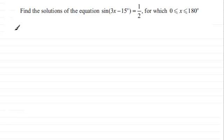Well first of all let's just copy down what we're given and that is sine of 3x minus 15 degrees equals a half. And we need to remove the sine here so what we do is we take the inverse sine to both sides. So that's going to give us 3x minus 15 degrees equals the inverse sine of one half.